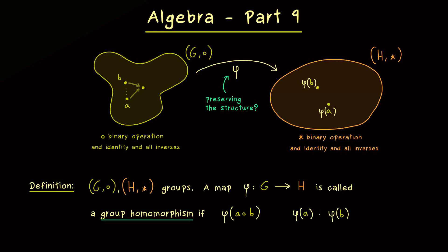And there we call it a group homomorphism if it satisfies the following property: we just take two elements A and B from the group G and put them together with the binary operation. On the right hand side in H we have the two images phi of A and phi of B, and these images can be combined with the binary operation in H. A group homomorphism is so nice that this equals the image of A with B. In other words, it does not matter if you first use the binary operation and then the map phi, or first the map phi and then the binary operation — and we want this for all A, B in G.